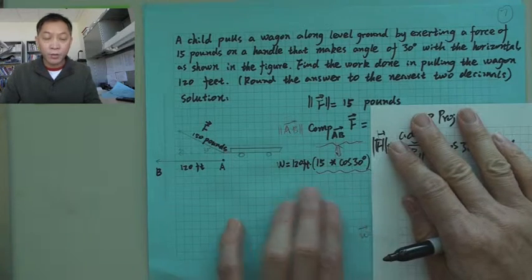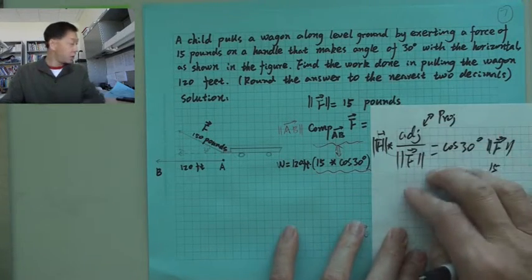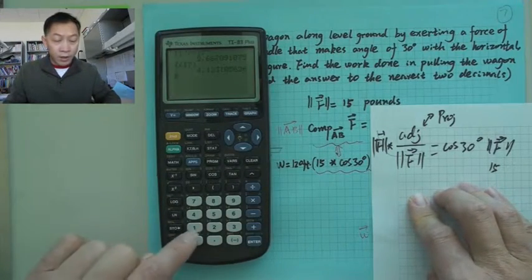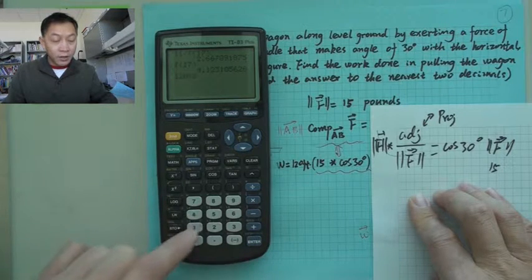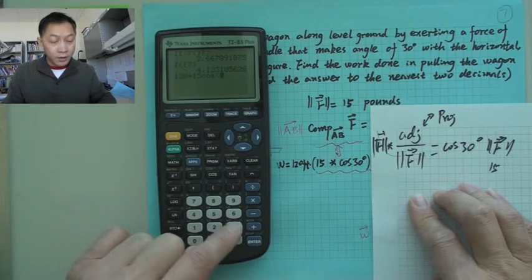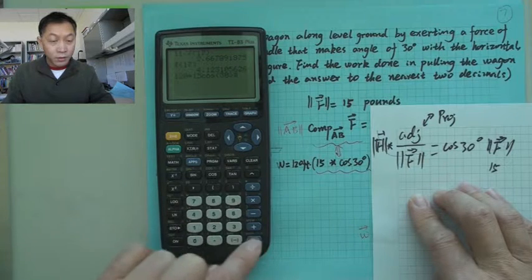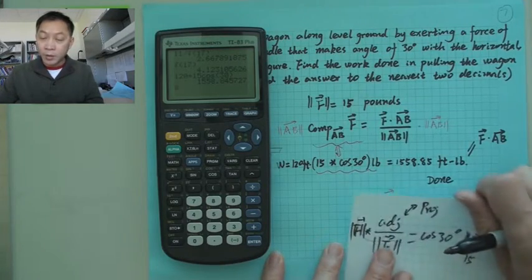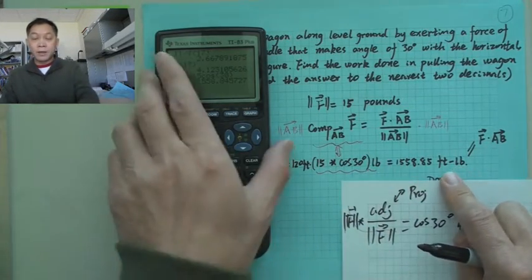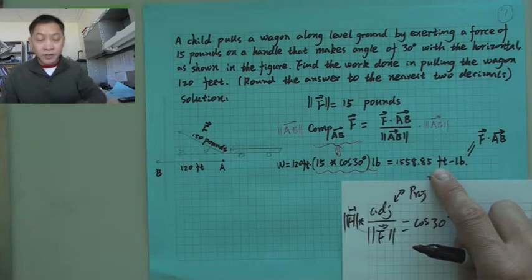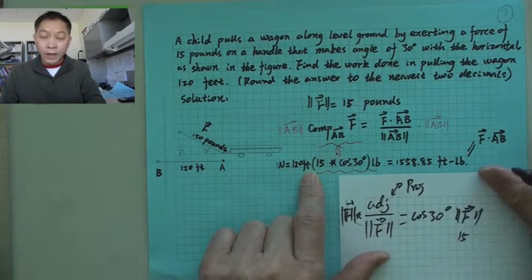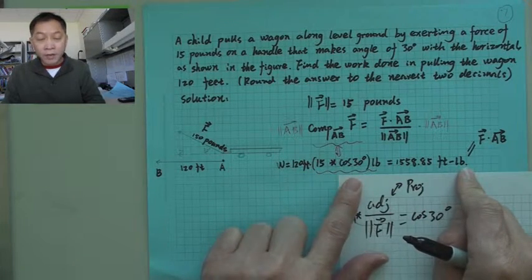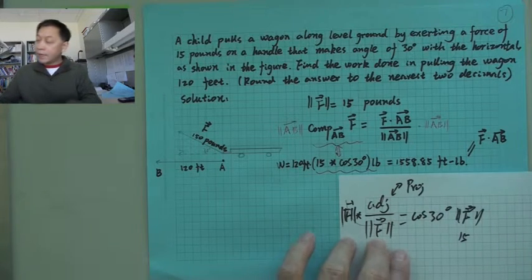Using a calculator: 120 times 15 times cosine 30 degrees gives approximately 1558.85. The unit is foot-pounds, since we have pounds for force and feet for distance. That is the amount of work.